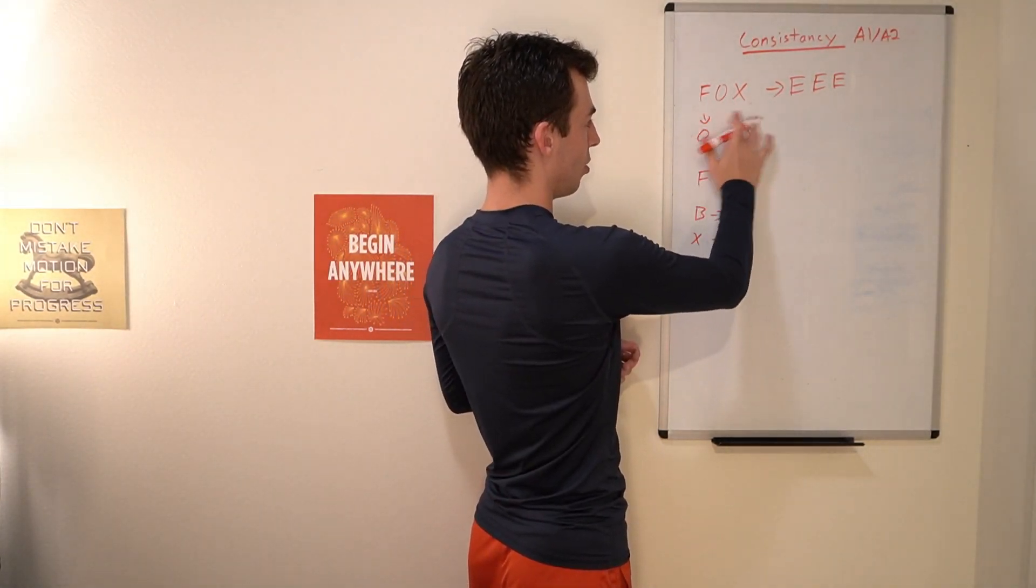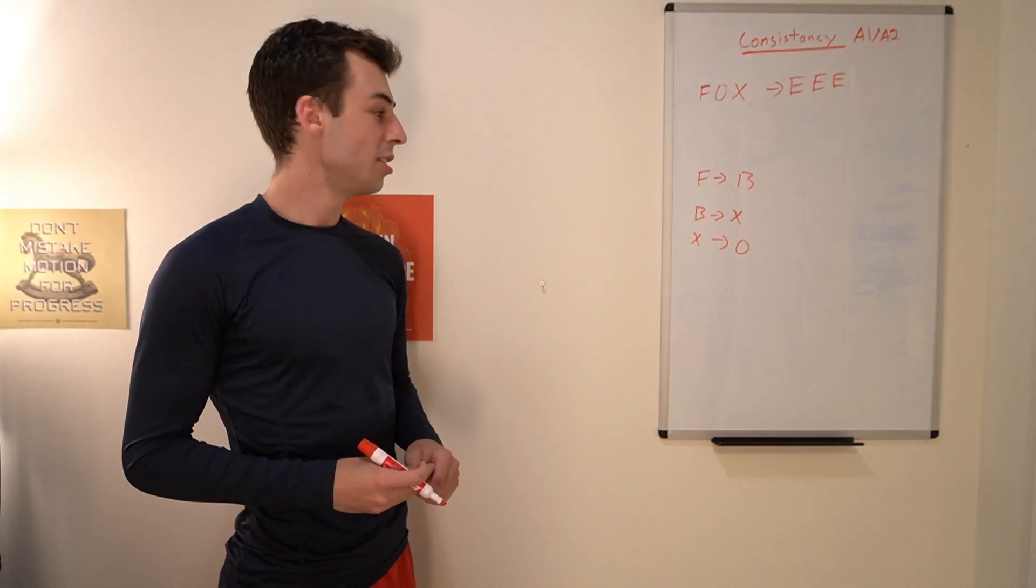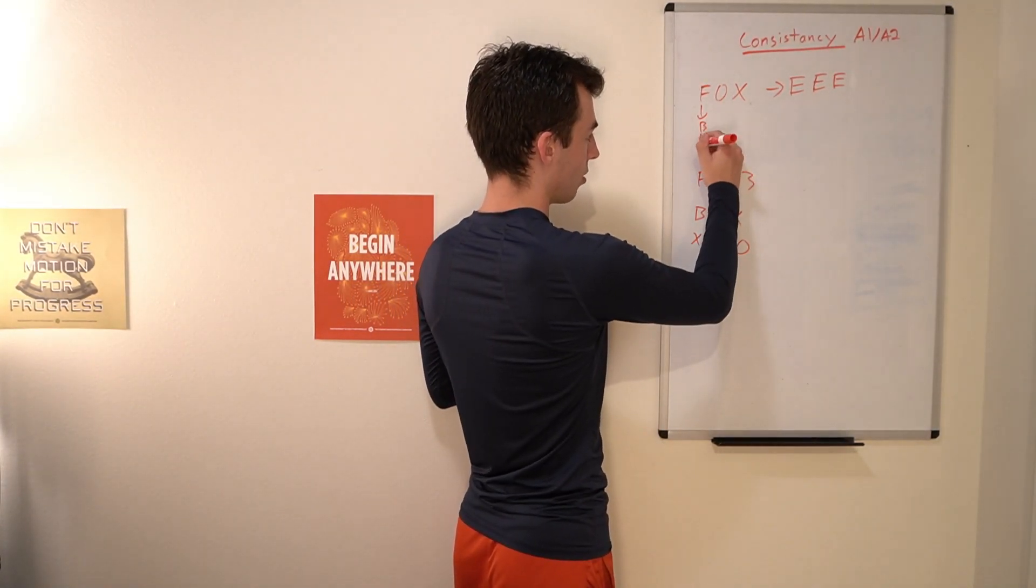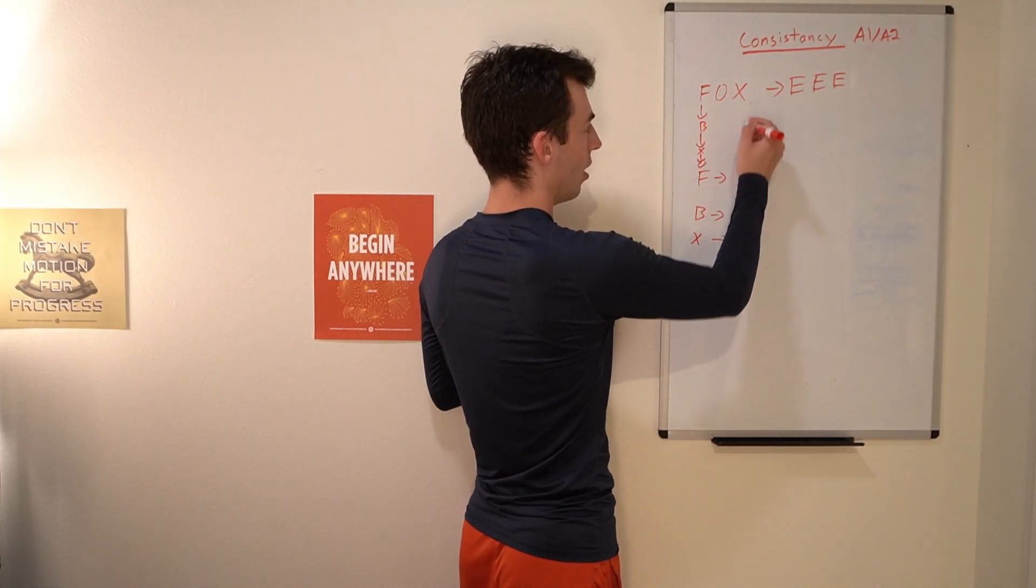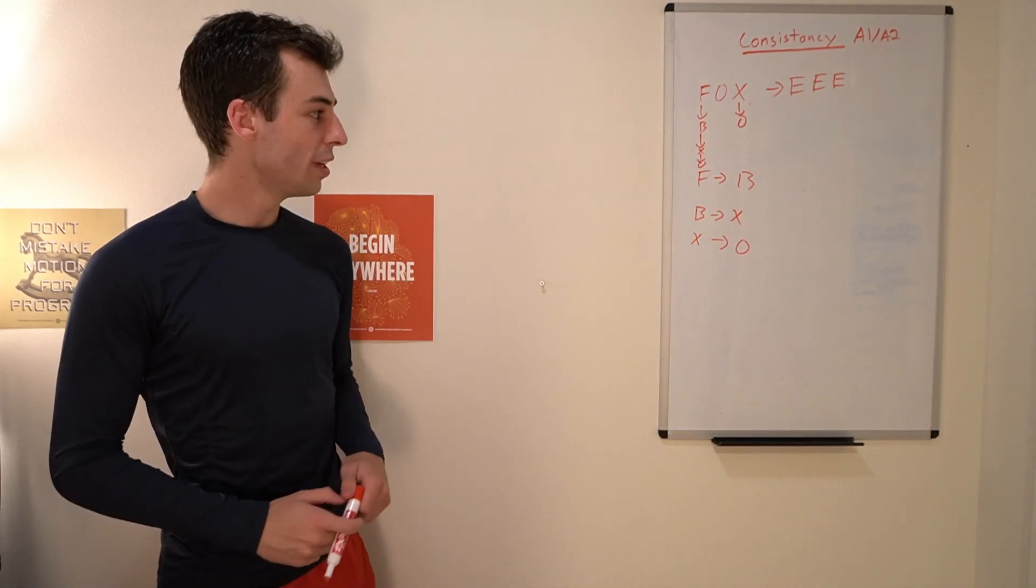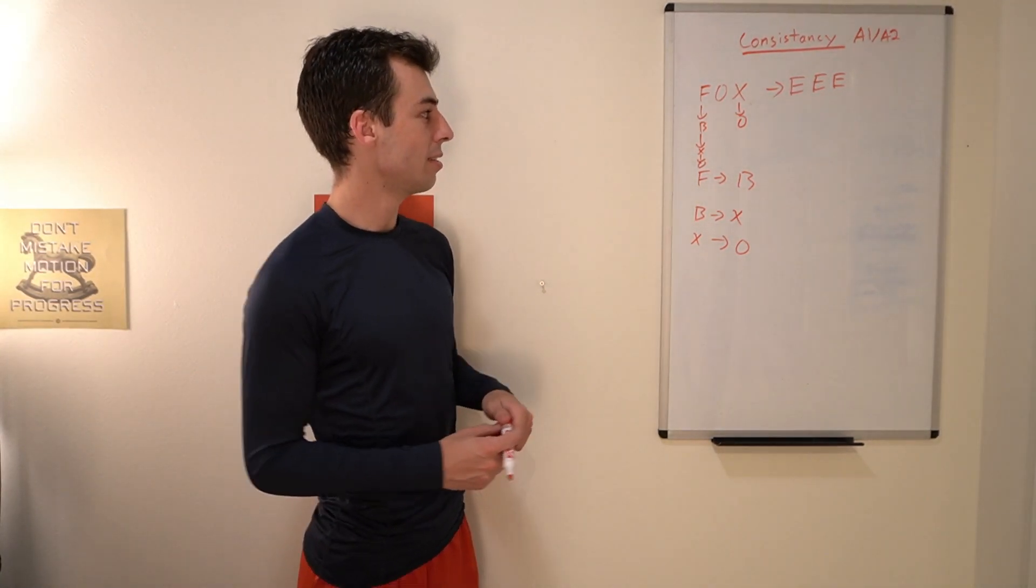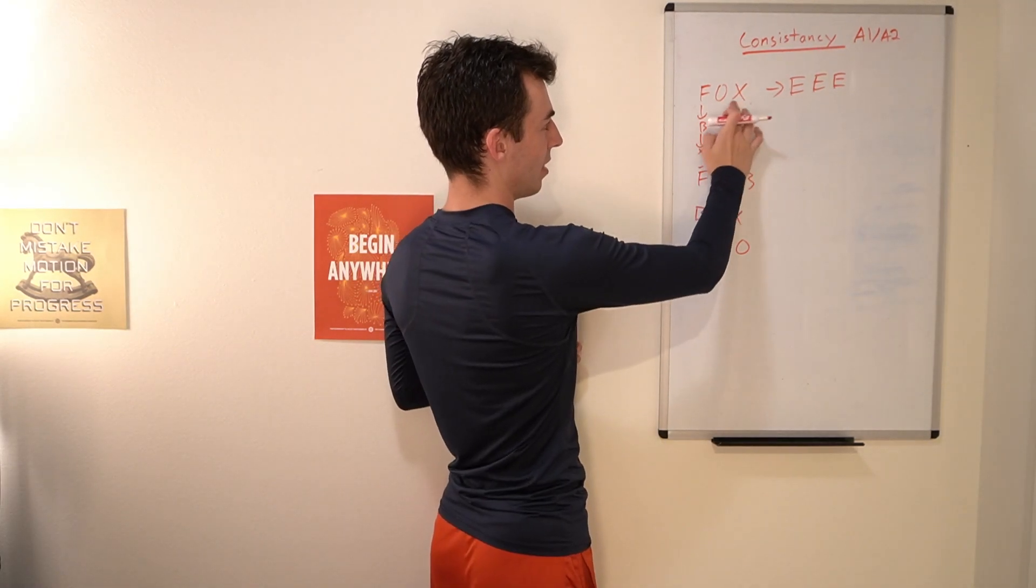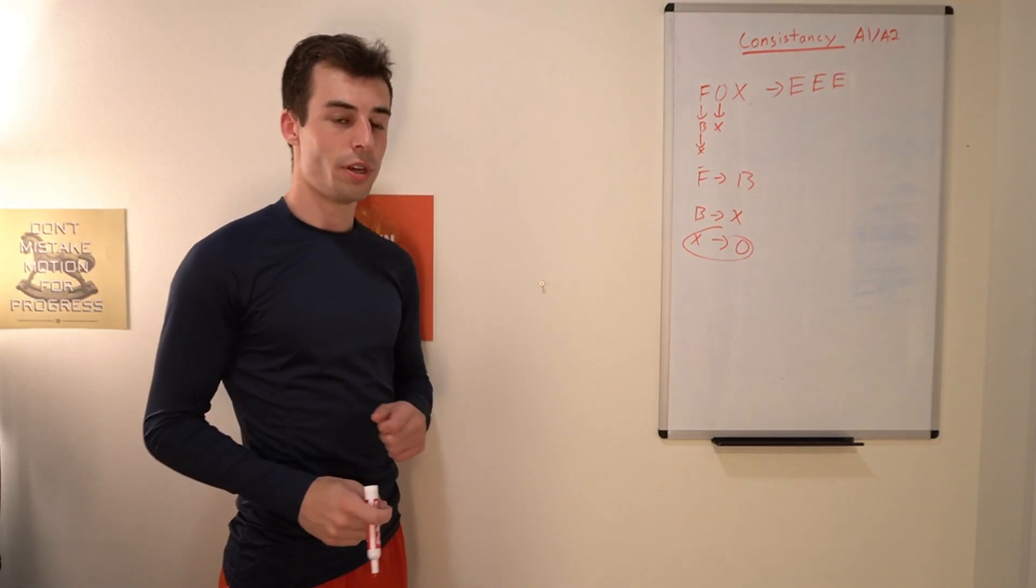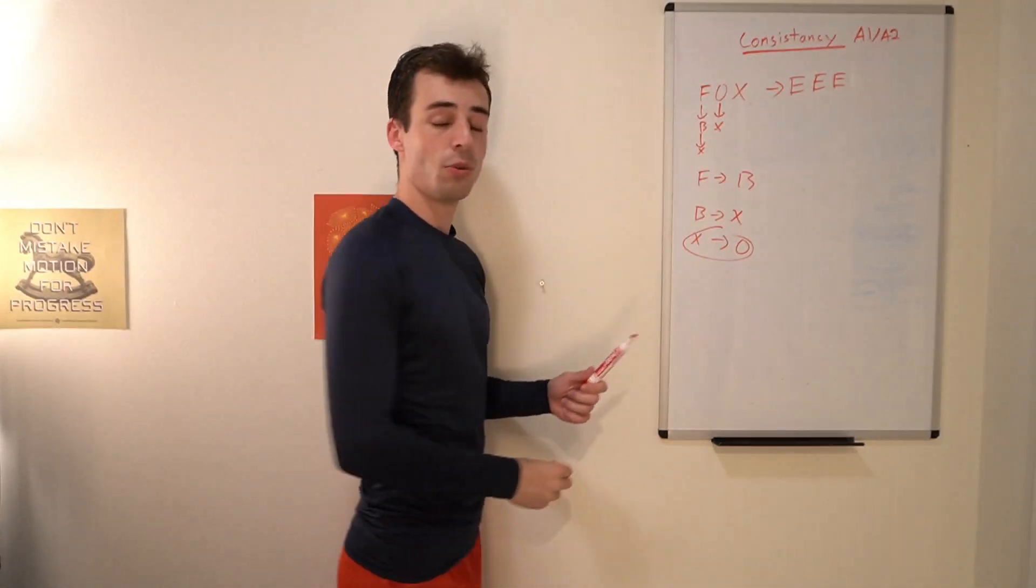In this case we can't necessarily turn the string fox into all E's because we're only allowed to use these specific replacements. So in this case we can turn the F into a B, we can turn the B into an X, and then we can turn this X into an O, and then we can turn this X here into an O. One thing to notice is that these replacements are one-way replacements. So you can't necessarily leave this as an X, leave this as an X, and then turn this into an X by going backwards here. So the direction of these changes is important, and it's pretty clear in the statement that these are one-way directions.